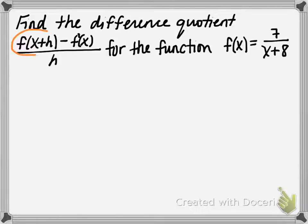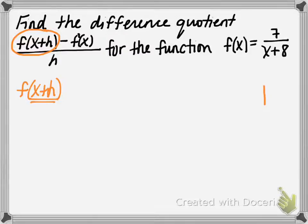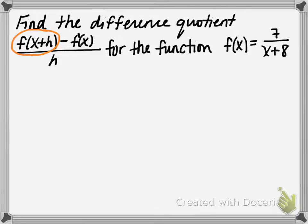We'll start with the first part of the difference quotient: f of x plus h. When you're using function notation, whatever's in the parentheses is the input. So in our function, we substitute x plus h in place of x. So f of x plus h gives us 7 divided by x plus h plus 8. I substituted the quantity x plus h in place of x.